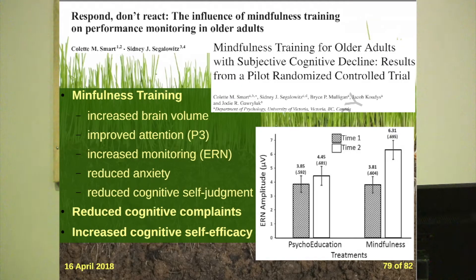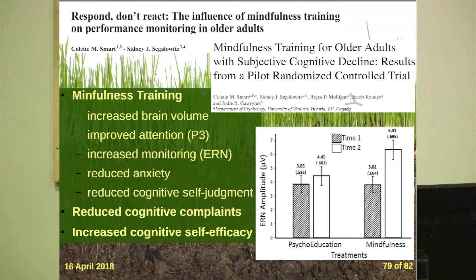Some studies I was involved with looked at moderating these existential emotional factors through mindfulness training. Compared to a psychoeducation group, adding mindfulness, relaxation, attention control, and reducing self-judgment actually increased people's brain volume. We improved their attention through an EEG component called P3, improved monitoring of cognition through an EEG component called the ERN. We reduced their anxiety about aging and reduced their cognitive self-judgments. Both interventions — mindfulness and education — reduced cognitive complaints and increased self-efficacy, meaning people felt they knew how to manage any memory issue.